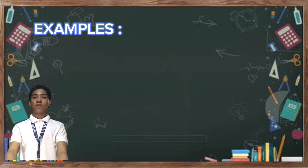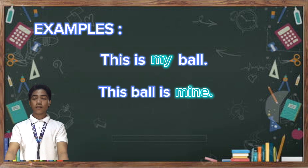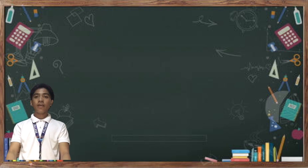Here are the examples. The first one is: 'This is my ball.' The second one is: 'This ball is mine.' In the first example we use the possessive pronoun 'my,' and in the second example we use the possessive pronoun 'mine.'